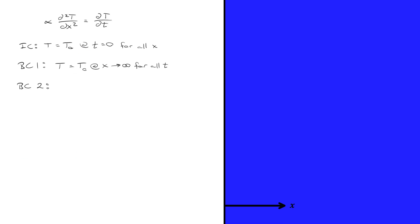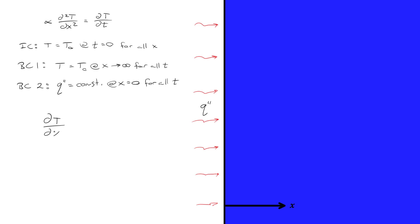In the second scenario, we change the second boundary condition. Instead of a fixed temperature at x equals zero, we apply a known heat flux at x equals zero, so the heat flux q-double-prime is equal to some constant value at x equals zero for all time. Mathematically, this means the temperature gradient dT/dx equals this known flux divided by the thermal conductivity.